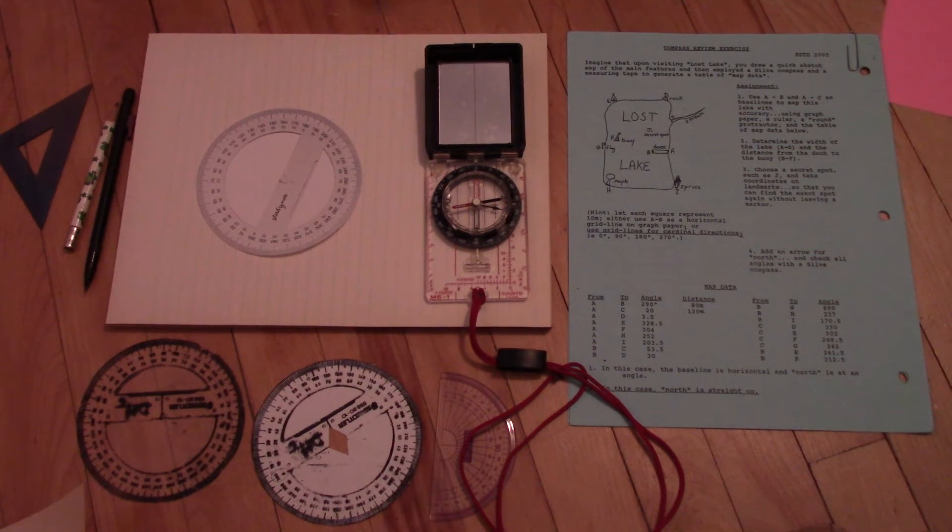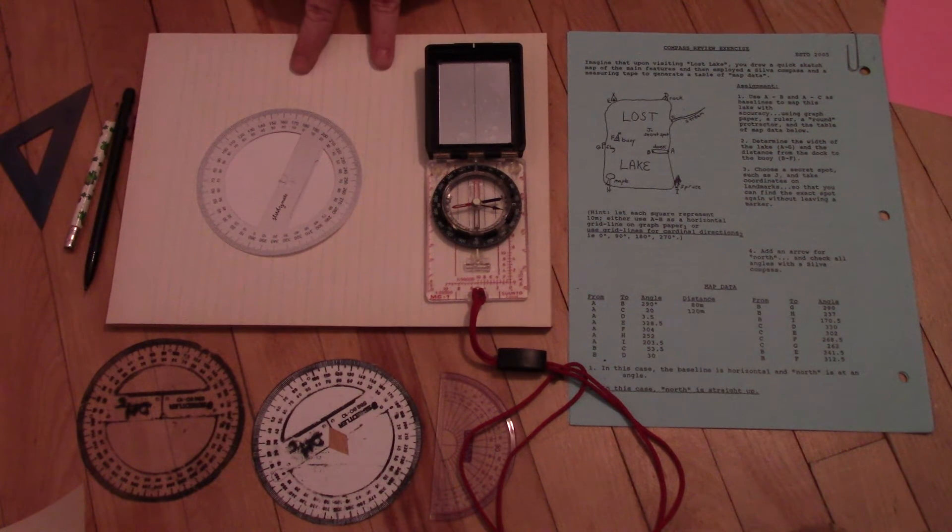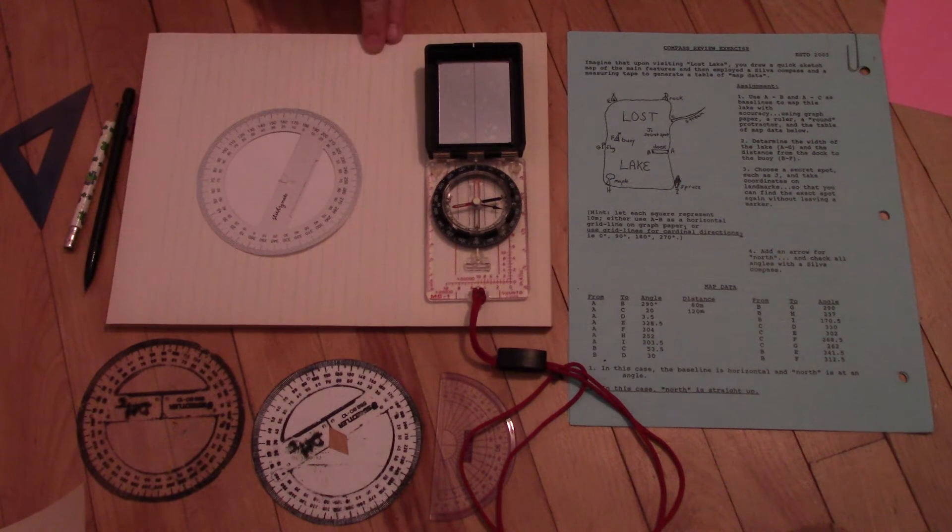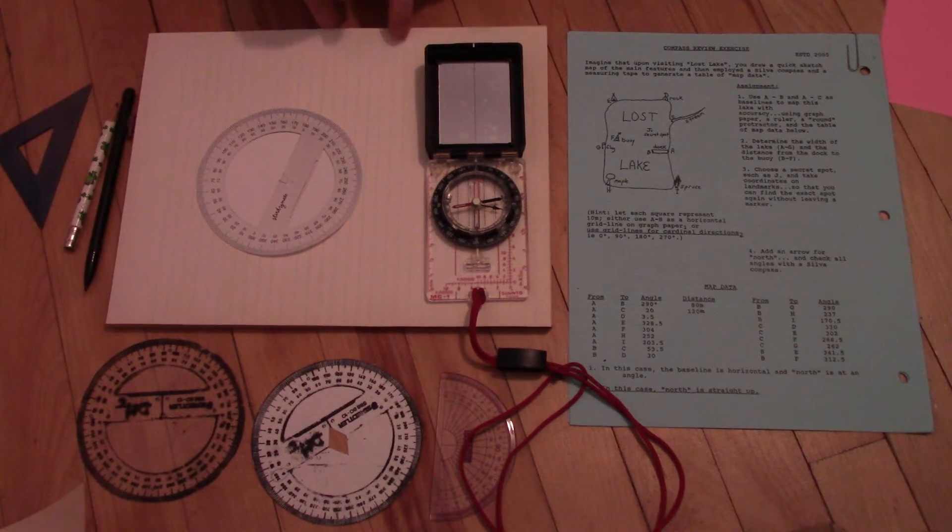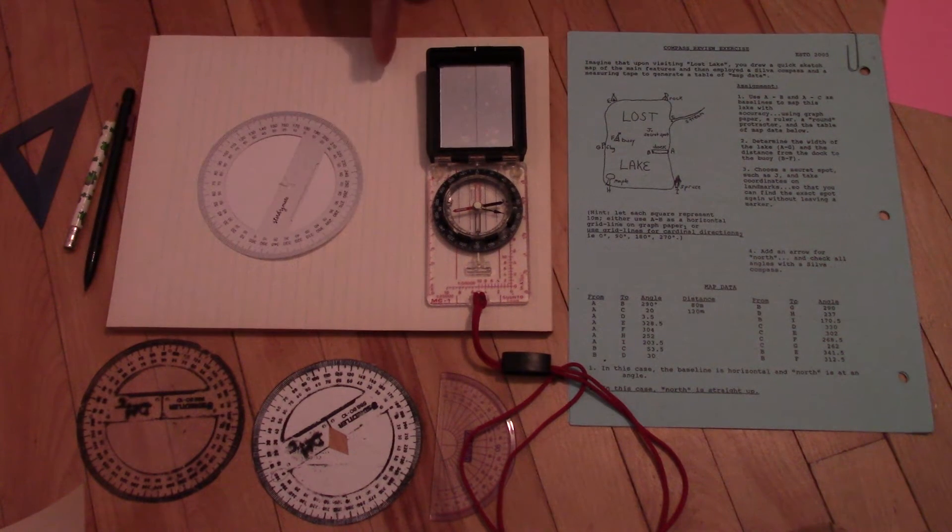You are going to need a piece of paper. It's easiest if you can get paper that has lines on it. A piece of graph paper would work well. You want the lines to show you where the north-south direction is. So I've taken just a normal lined piece of paper and put it on its side, so that I can have north facing up.